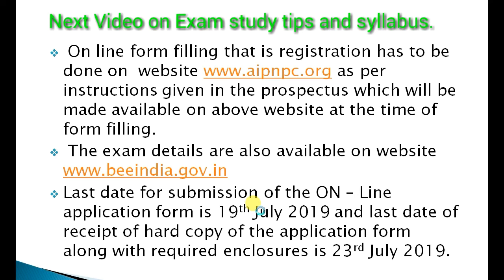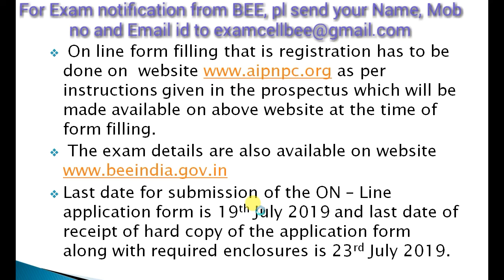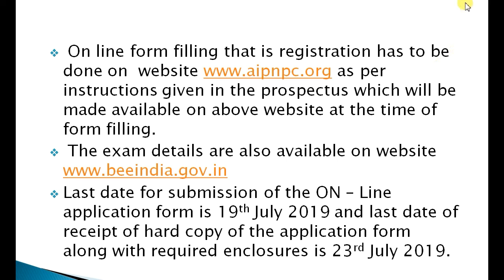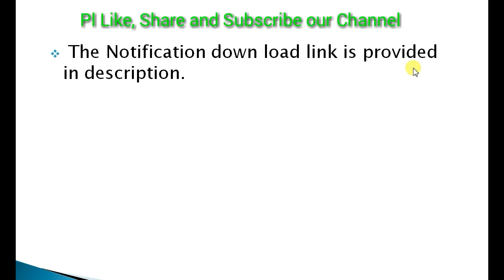After taking the printout, attach required documents like your experience certificate and send the hard copy of your application form and details to the BEE or National Productivity Council Chennai before 23rd July 2019. The details of the enclosures and the method of online form filling have been discussed in our previous video session, which is Part 4. If you have not watched that video, you can press the 'I' button in the upper right corner of this page.